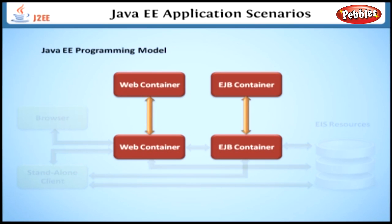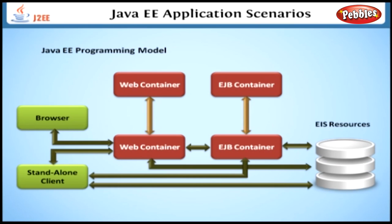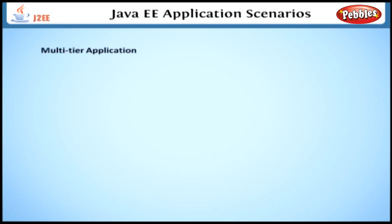We can have more than one web container and EJB container that may be in the same machine or in a different machine. A browser client can also access the EJB container through the web container. Let's discuss the various application scenarios, starting with the multi-tier application.